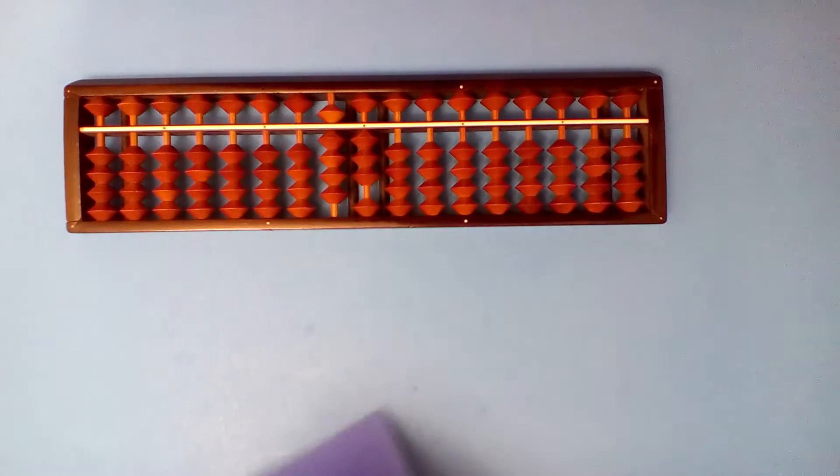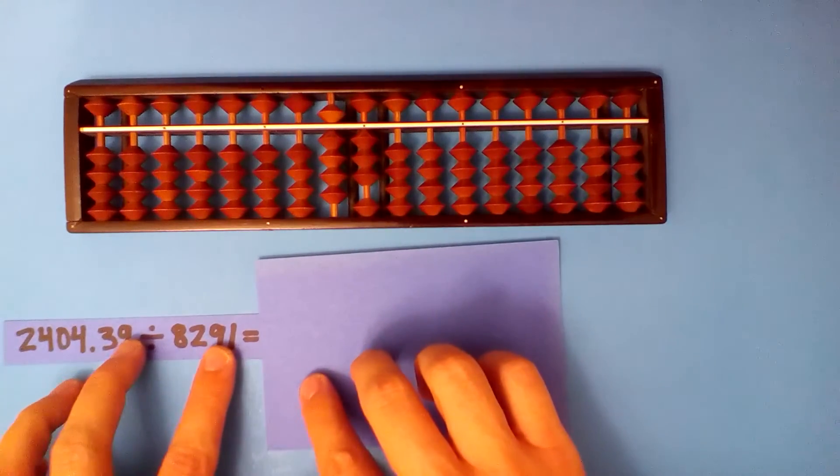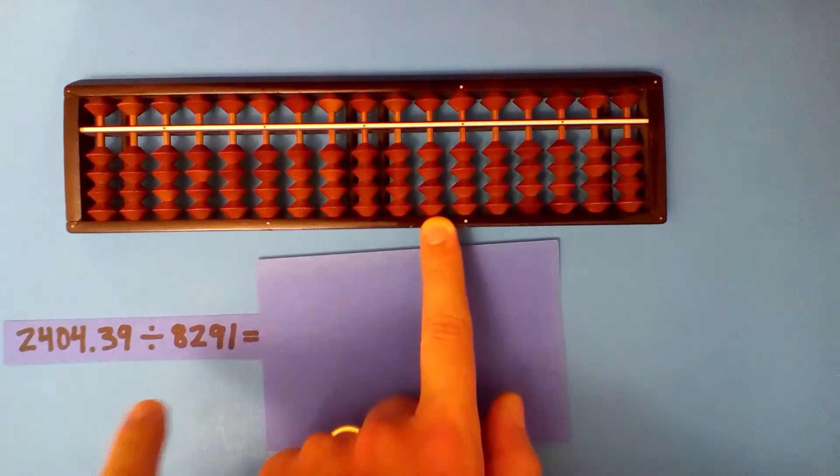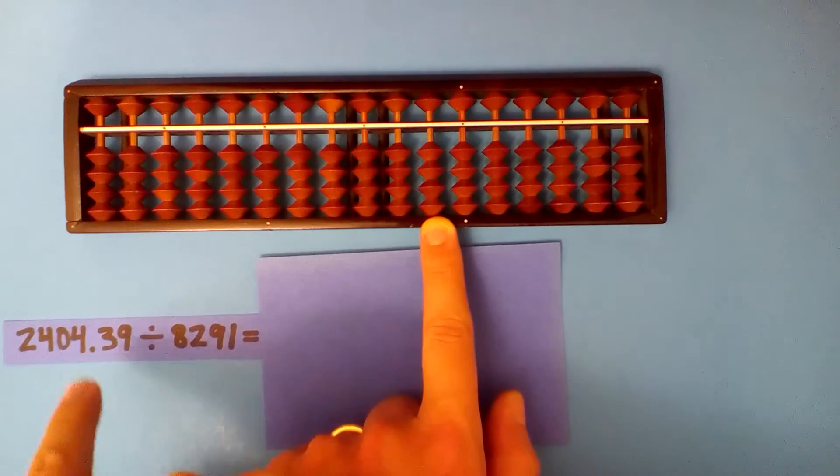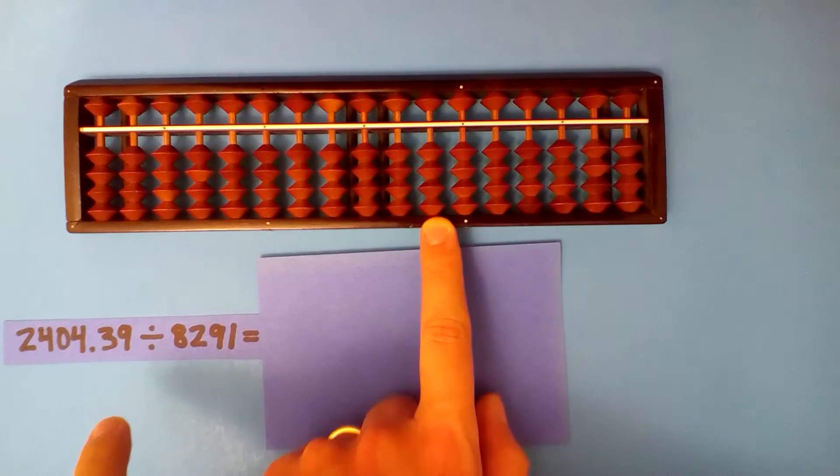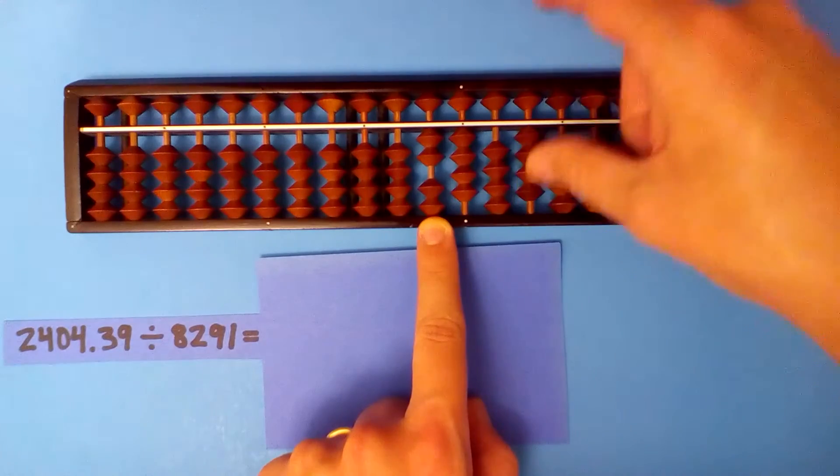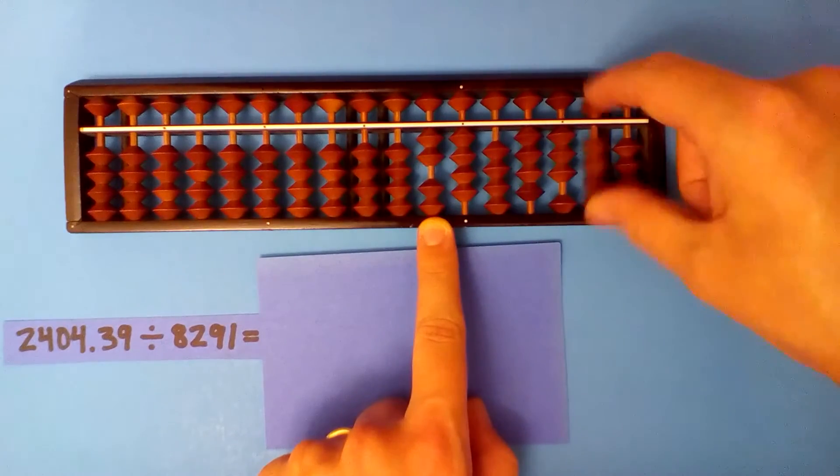One more example. We start on the hundredths, but there are zero more digits, so we don't move at all in this case. We'll set up right here: 2404.39.